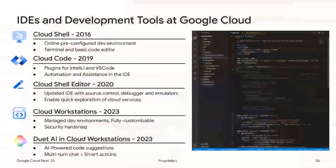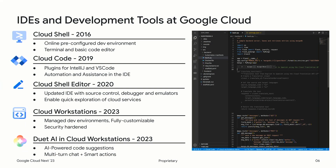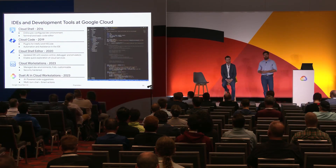We also have Cloud Code — IDE extensions you can install on your preferred IDE, be it Visual Studio Code, IntelliJ, or PyCharm, helping you while developing against Google Cloud for things like Kubernetes on GKE or Cloud Run. Three years ago, we announced a major update to the Cloud Shell editor, introducing debugging, troubleshooting, and versioning. This year at Google I/O, we announced the GA of Cloud Workstations, which we'll be covering in depth today.